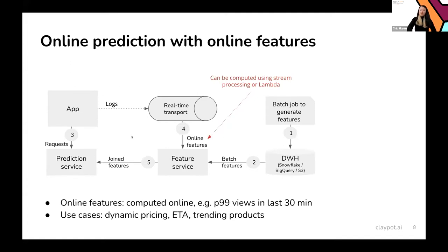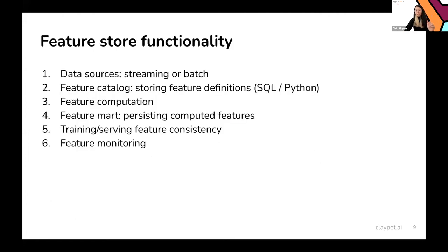If you compute training features inside the feature store, it can reuse the same feature definitions and go back in time to generate historical features. But if you generate training features outside the feature store, it can be very hard to ensure consistency. One last point: when generating batch features offline, you can do many tests to make sure they make sense. But if you generate online features and immediately use them for predictions, you need some way to ensure those online features have good quality — that's the feature monitoring aspect of the feature store.